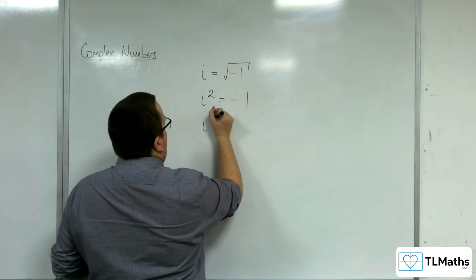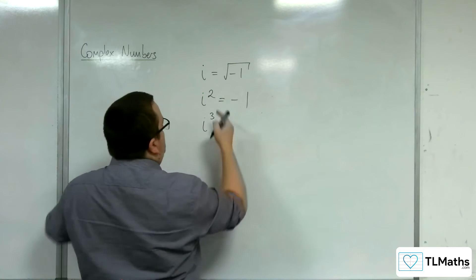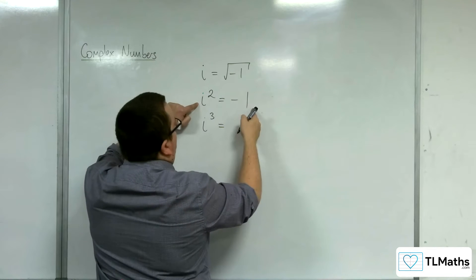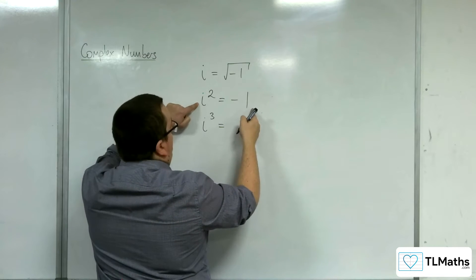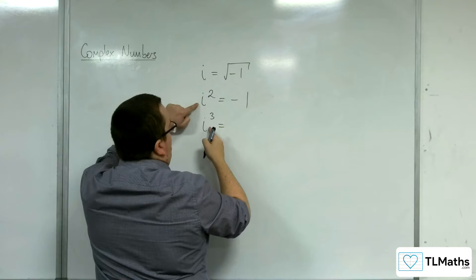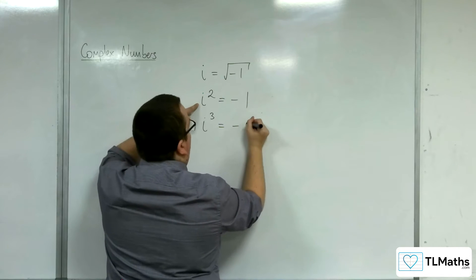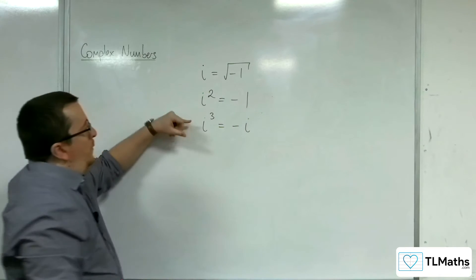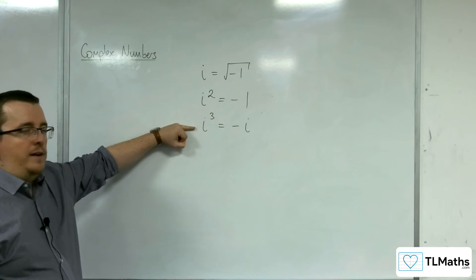Now, if I've got i cubed, I'm multiplying both sides of this equation by i. That gets me i cubed, so I get minus 1 times i, which is negative i. So i cubed must be negative i.